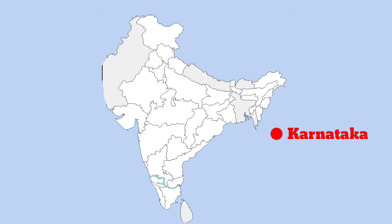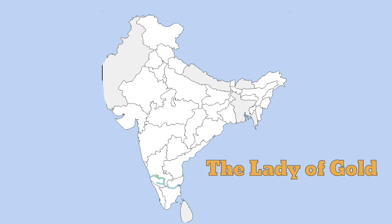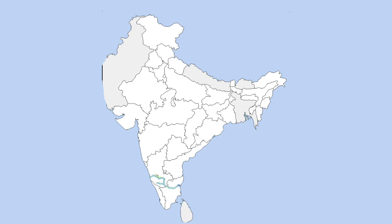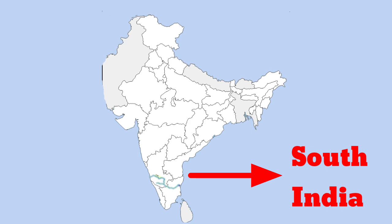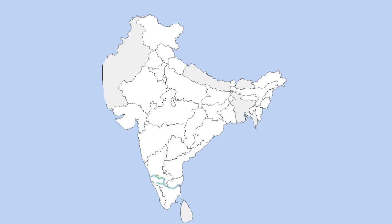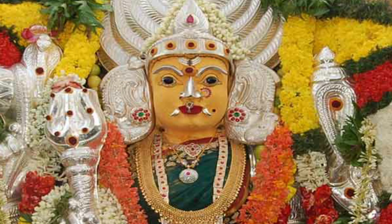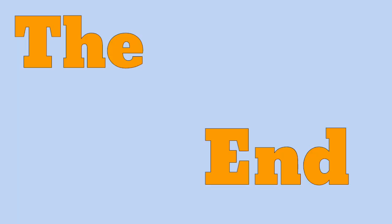Kaveri: it flows through the states of Karnataka and Tamil Nadu. It is also known as Ponni, the lady of gold. It is a sacred river to the people of South India and is worshipped as the goddess Kaveri Amma.